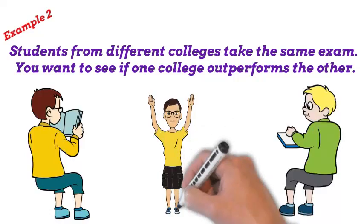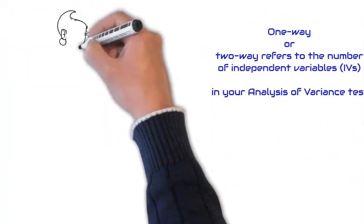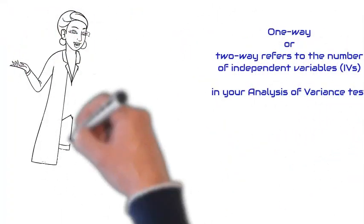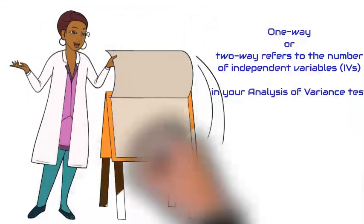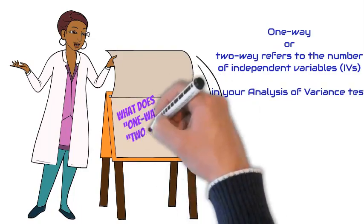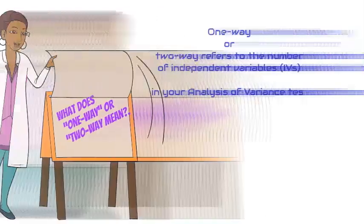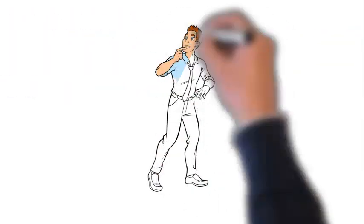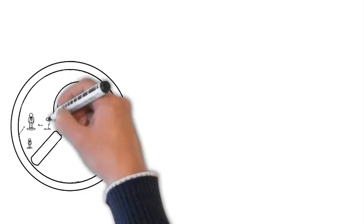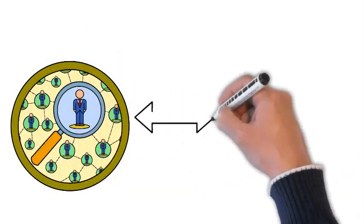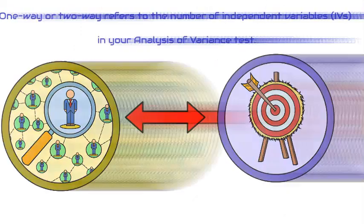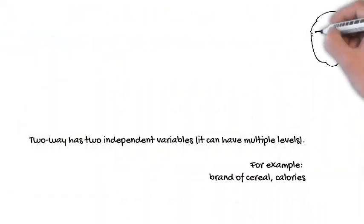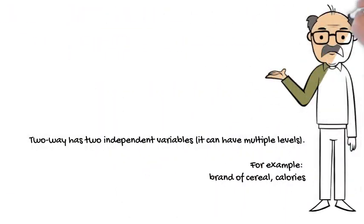But what does one-way or two-way mean? One-way or two-way refers to the number of independent variables in your analysis of variance test. A one-way test has one independent variable with two levels — for example, brand of cereal. A two-way test has two independent variables and can have multiple levels — for example, brand of cereal and calories.